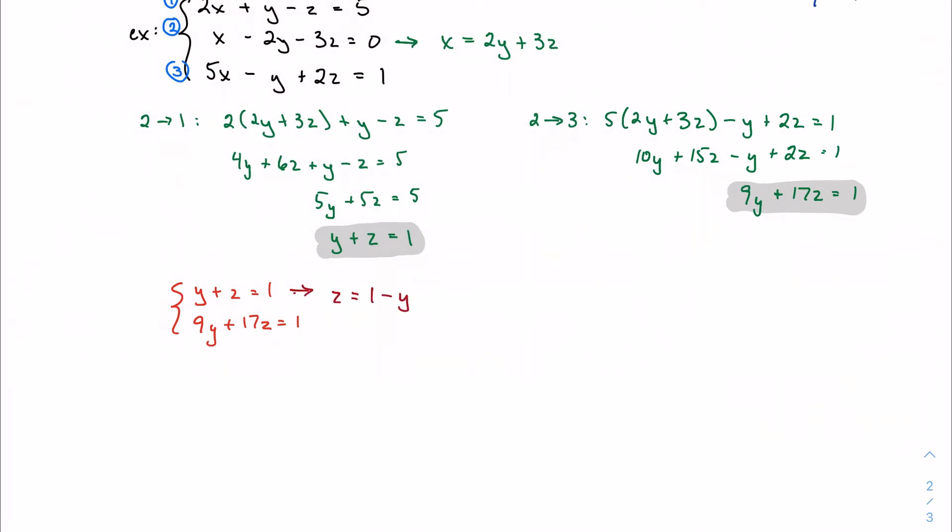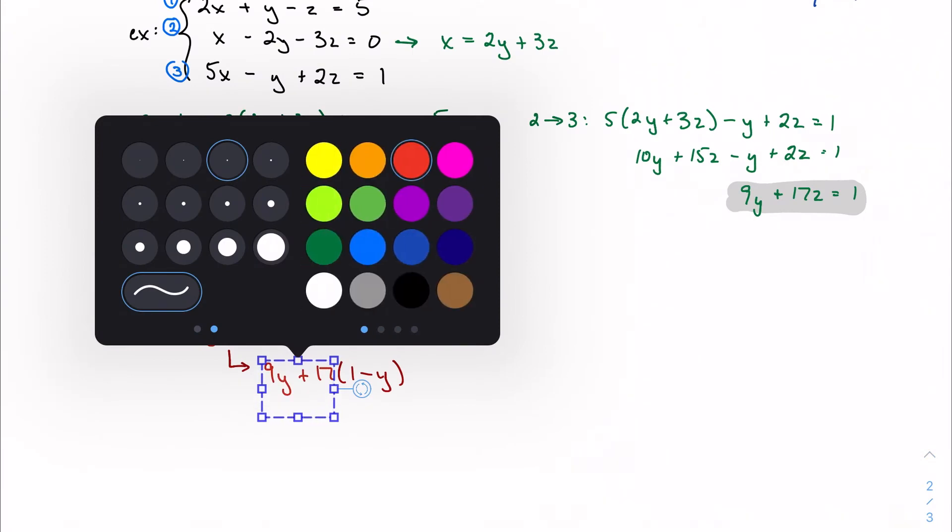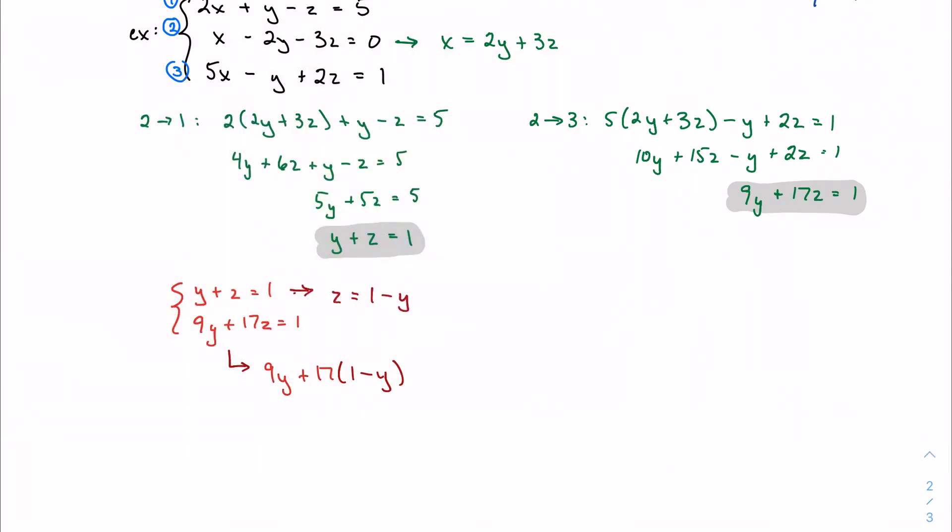So z is one minus y, which means when I make that substitution here, I have 9y plus 17 times one minus y. Actually, let me keep my colors consistent here.